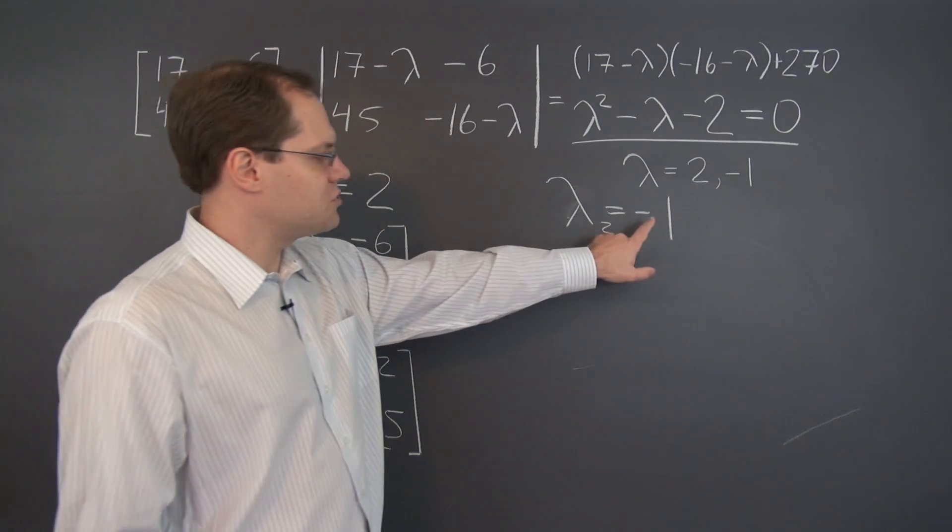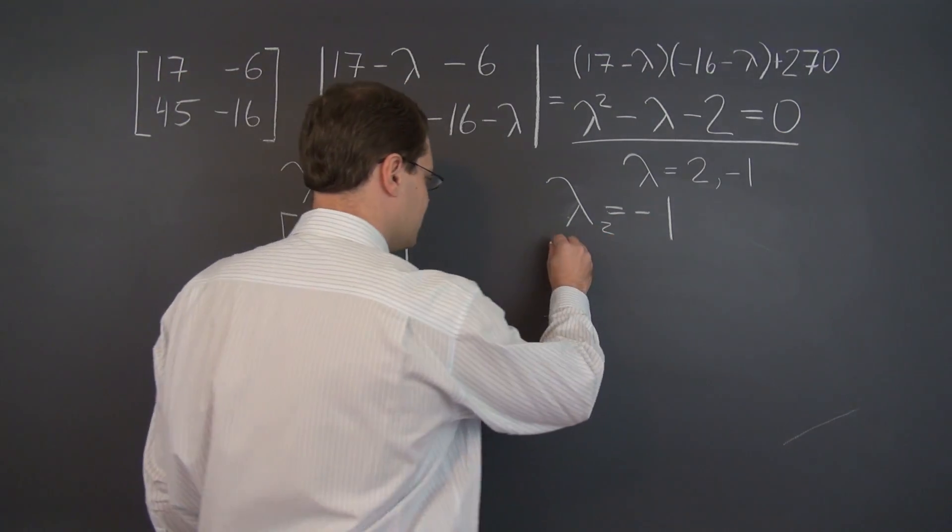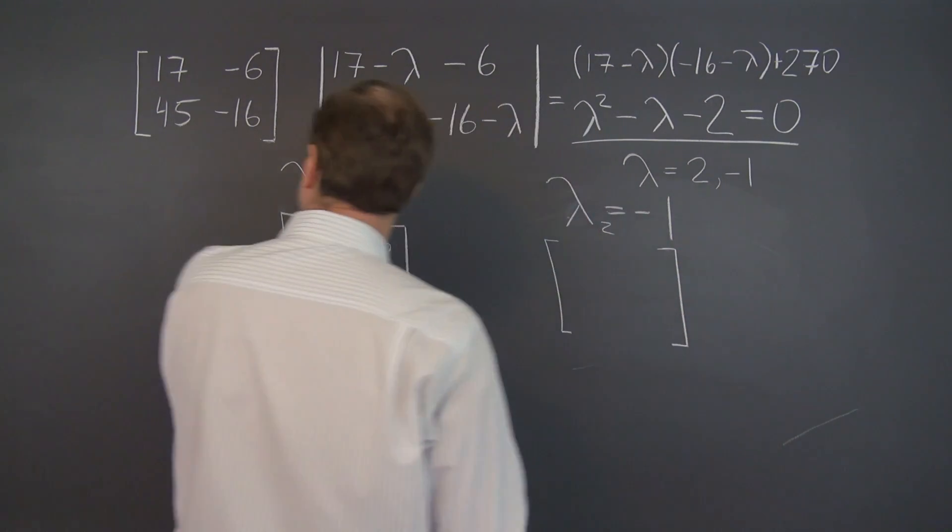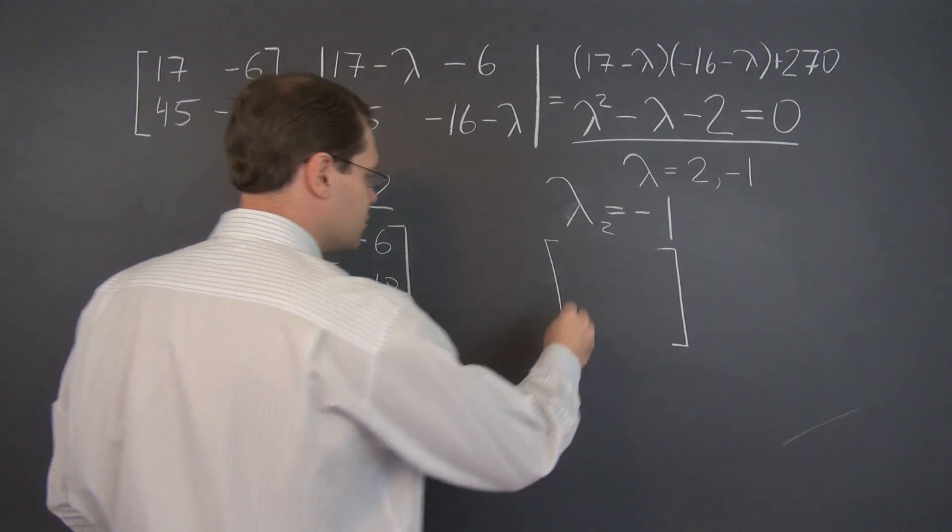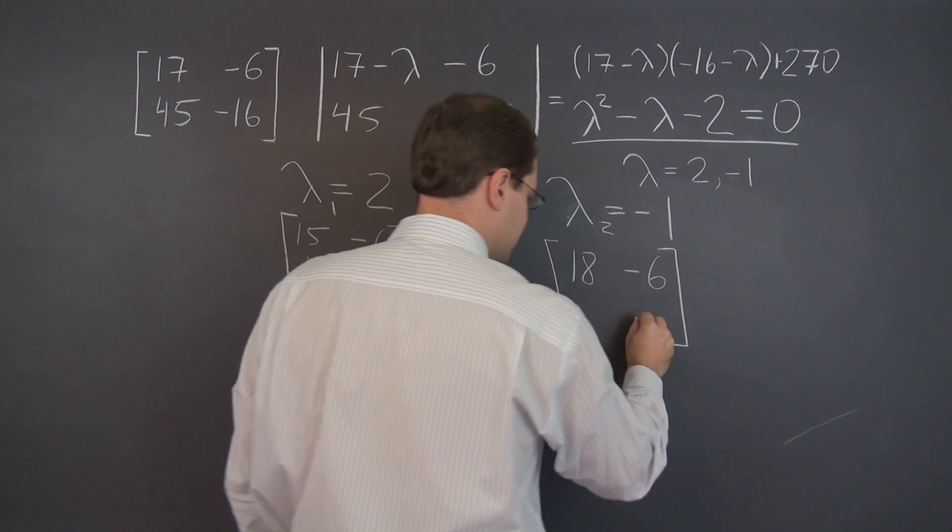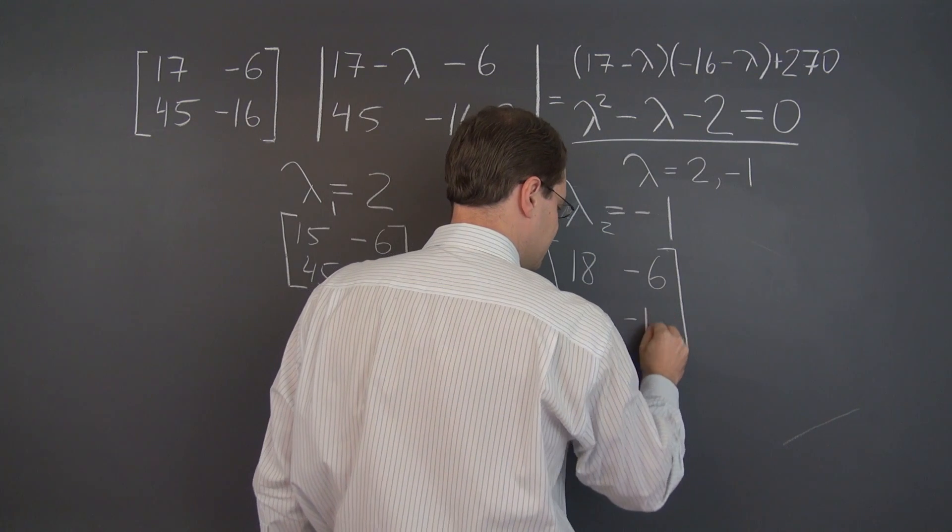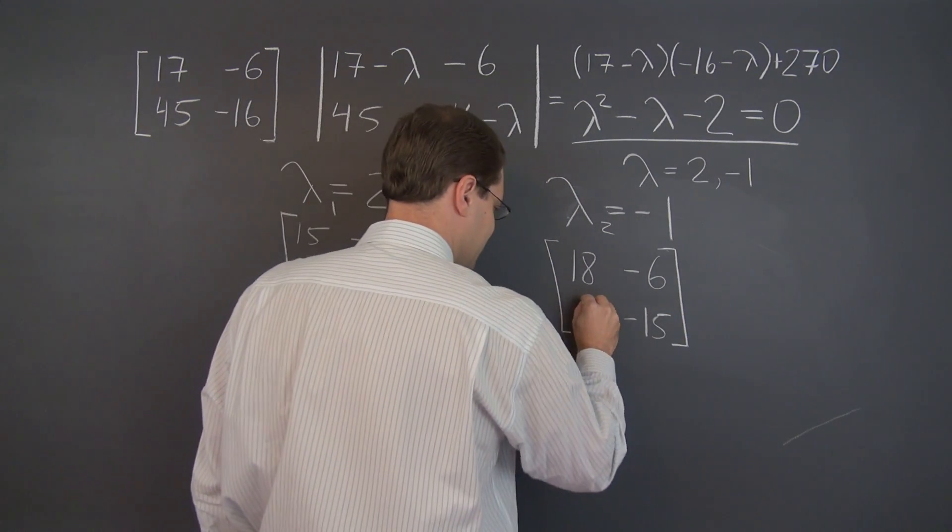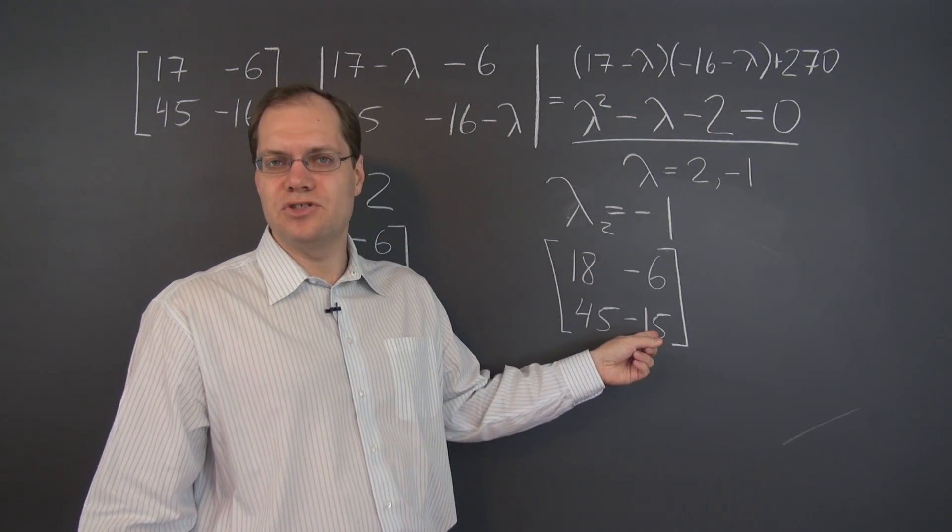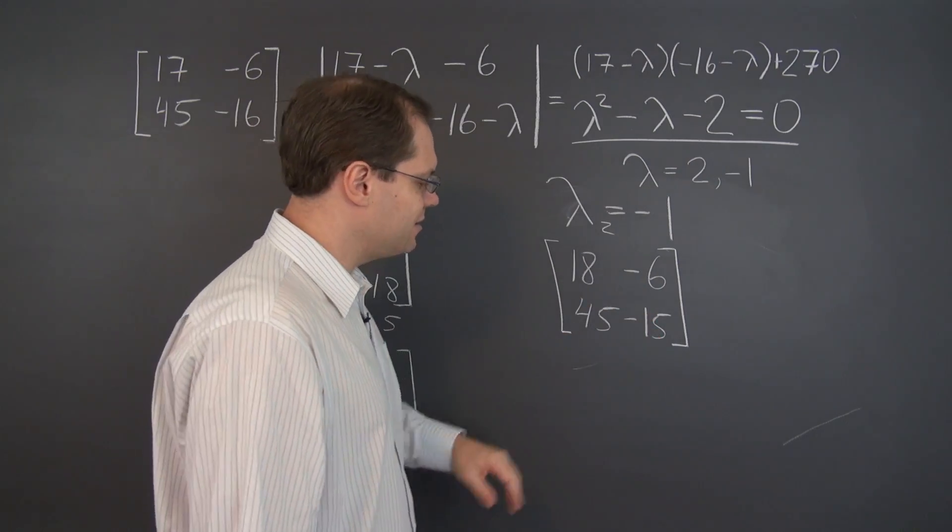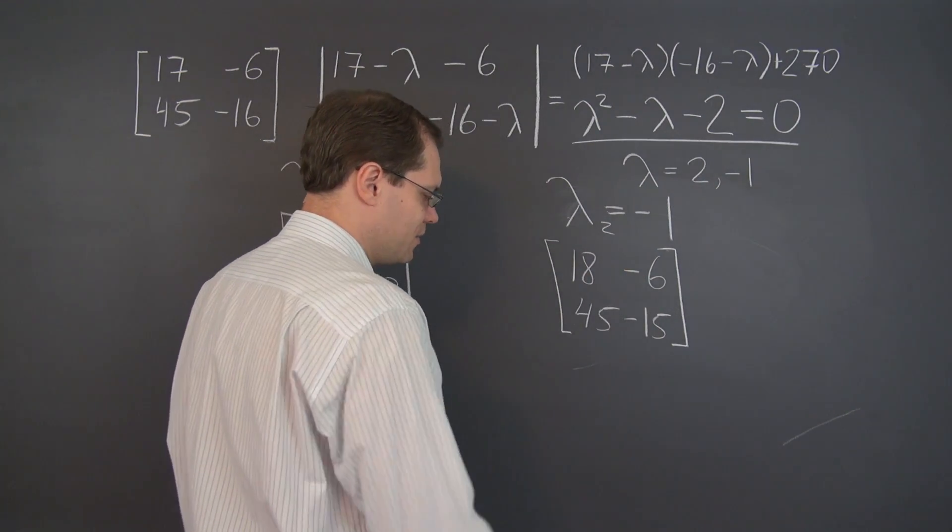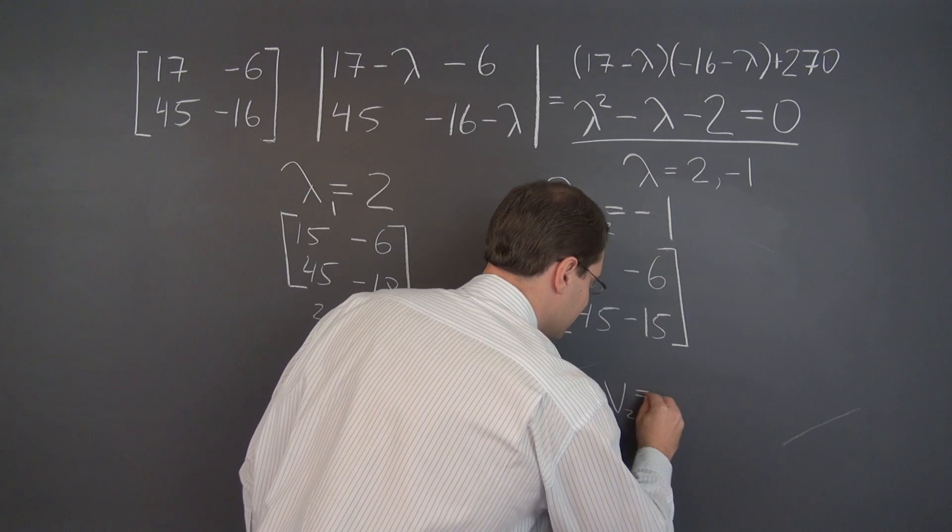For the other one, we have to subtract minus 1 from the diagonal. Subtracting minus 1 is the same as adding 1. So let's see what we get in this case. We're adding, so 18, minus 6, and minus 15, and 45 is unchanged. It's good practice, which I didn't do this time, to write down the diagonal entries first, and then fill in all of the other entries that are unchanged.